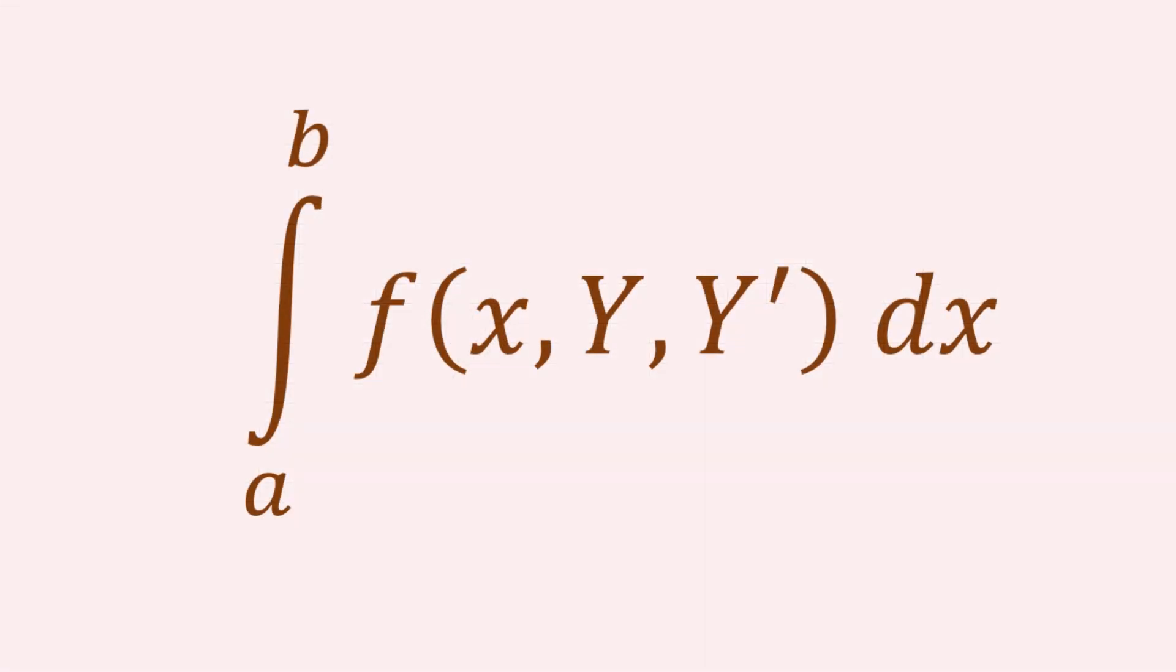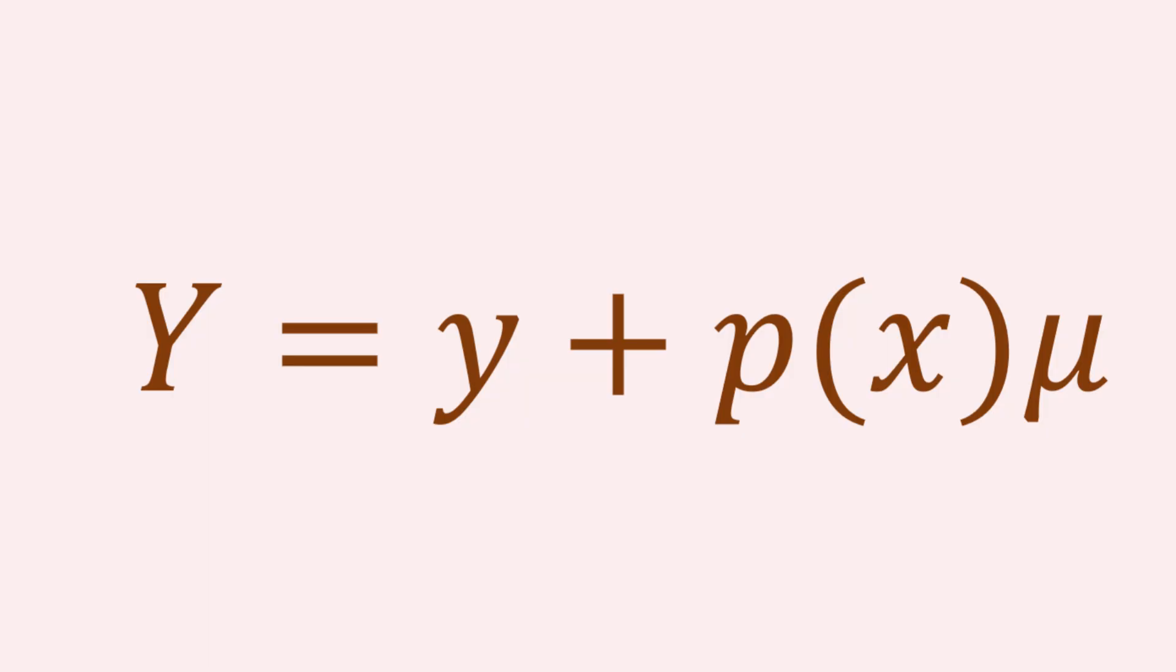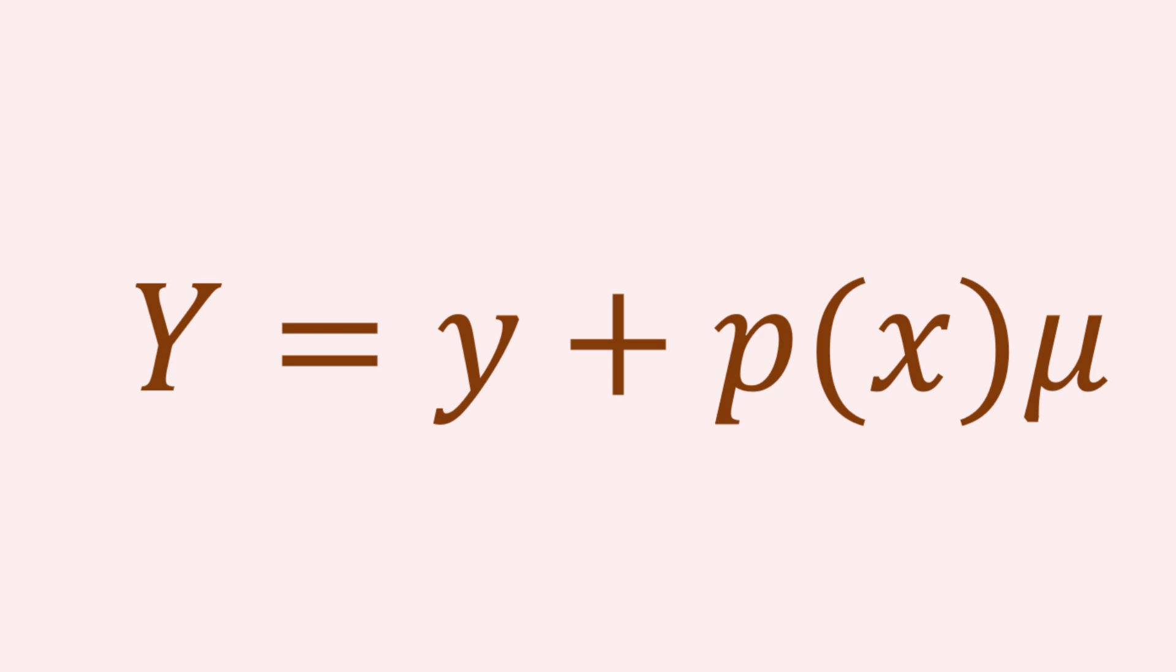When we take the integral of this new function, we can obtain the outputs of the varied version of the function. So, when the parameter's value is zero, we get the original function, thereby giving the extremal output.